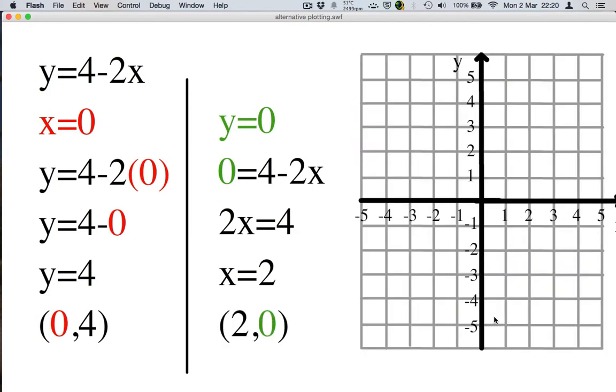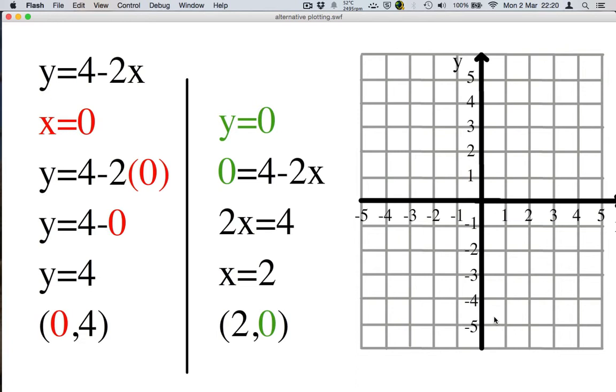Now what we do is we take our set of axes, we have nicely drawn here, and we plot the point (0,4). 0 along, 4 up. We then plot the point (2,0). 2 across, 0 up, as it brings us here. And then we join these points with a nice straight line and extend that line into infinity.